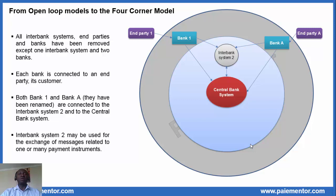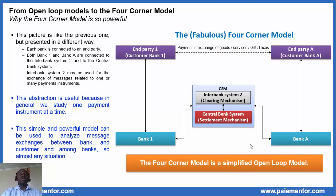Now we will try to make this model look a bit more beautiful. After asking an artist to help me, I got the result on the next slide. This is just the previous picture presented in a different way — the content is exactly the same. We still see that each bank is connected to an end party, and both Bank 1 and Bank A are connected to interbank system 2 and to the central bank system. We have put interbank system 2 and the central bank system in one box that we call CSM — clearing and settlement mechanism. This abstraction is really useful because in general we study one payment instrument at a time, so we do not need to see all interbank systems on the picture.